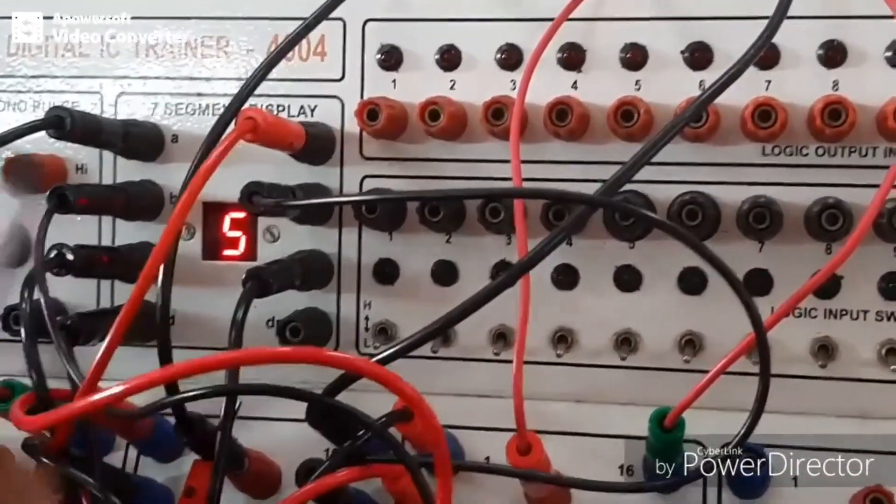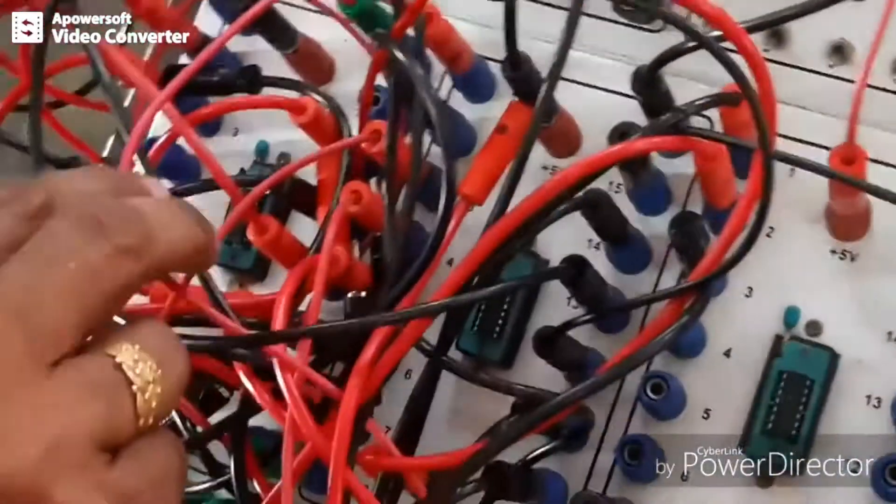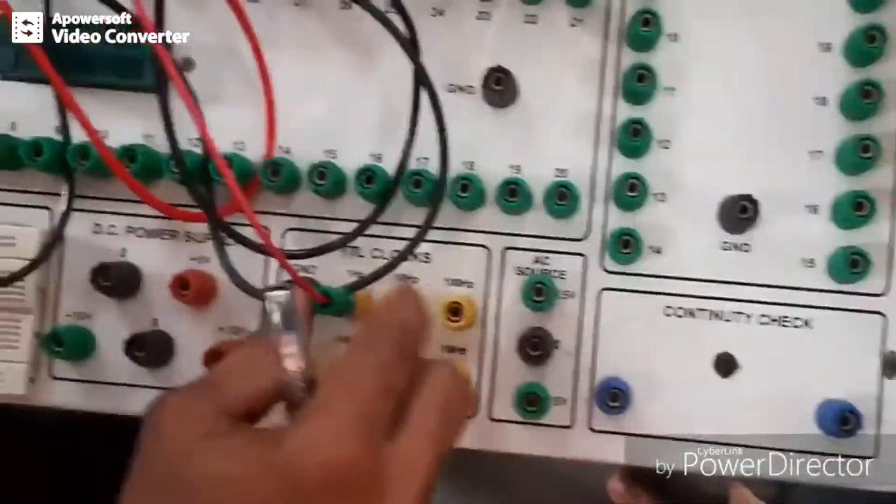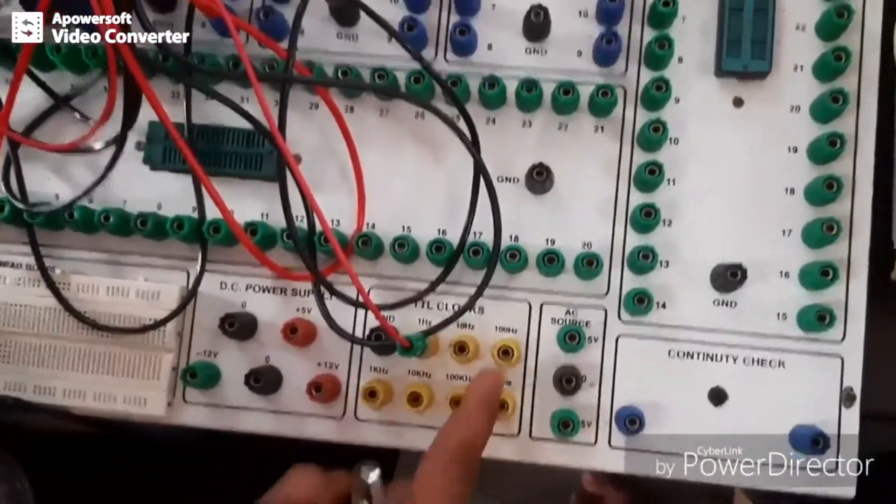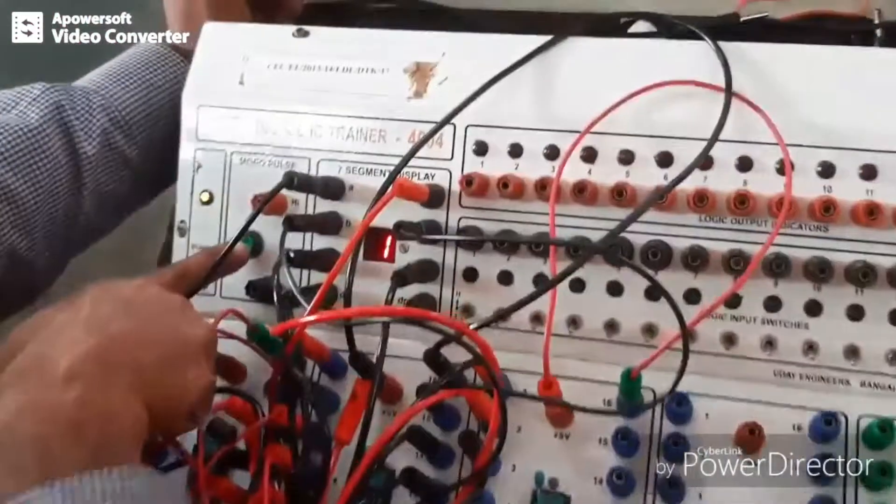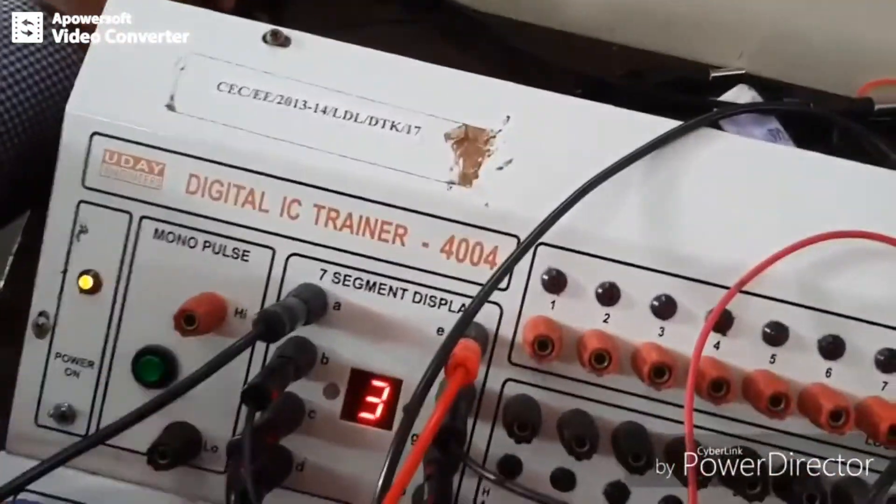This is the implementation of mod 6. Please remember we are giving input through clock signal. Clock signal you can connect to auto clock or manual clock. You can connect it to auto clock of 1 hertz or clock signal of whatever frequency you want.